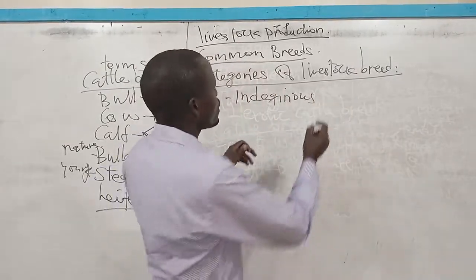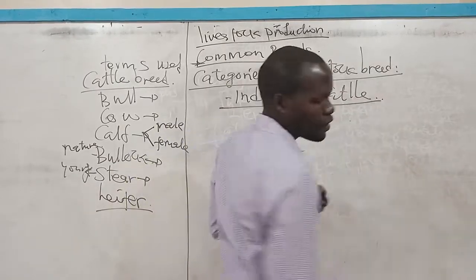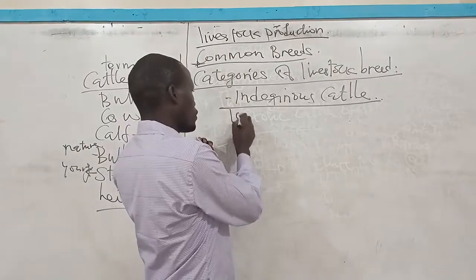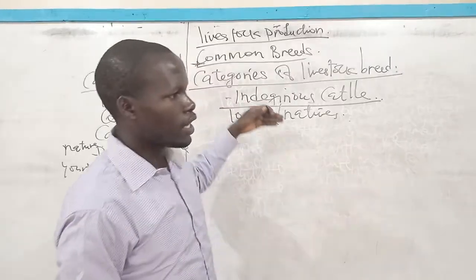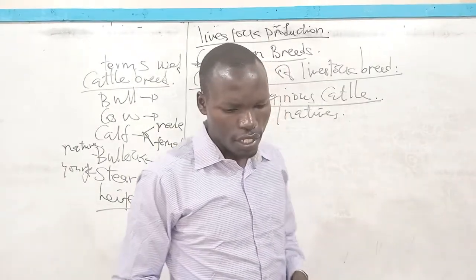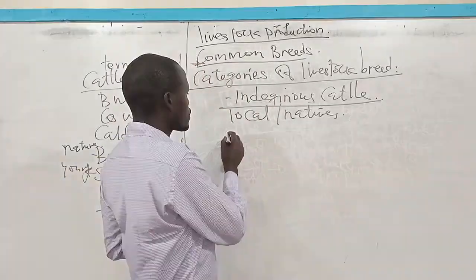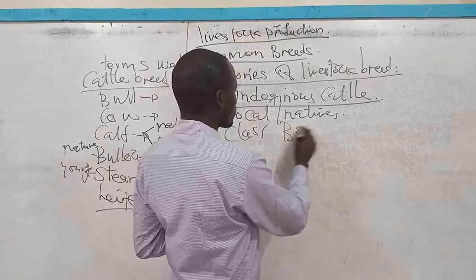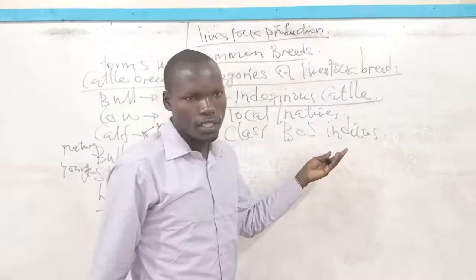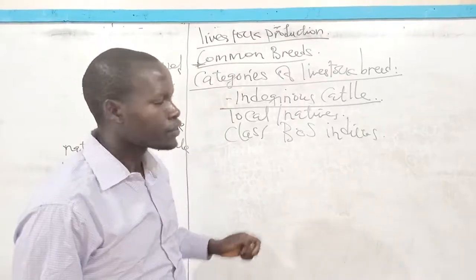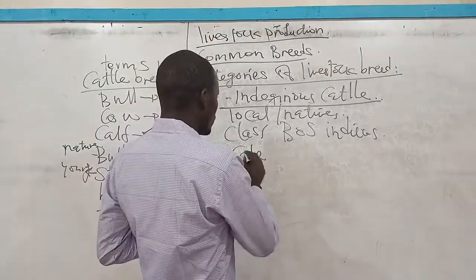Now, to note about the indigenous cattle breed: these are the natives, or the locals of these regions. They belong to a class called Bos indicus. Of concern is that this breed of cattle is not categorized as a controlled breed, meaning the breeding pattern is uncontrolled.